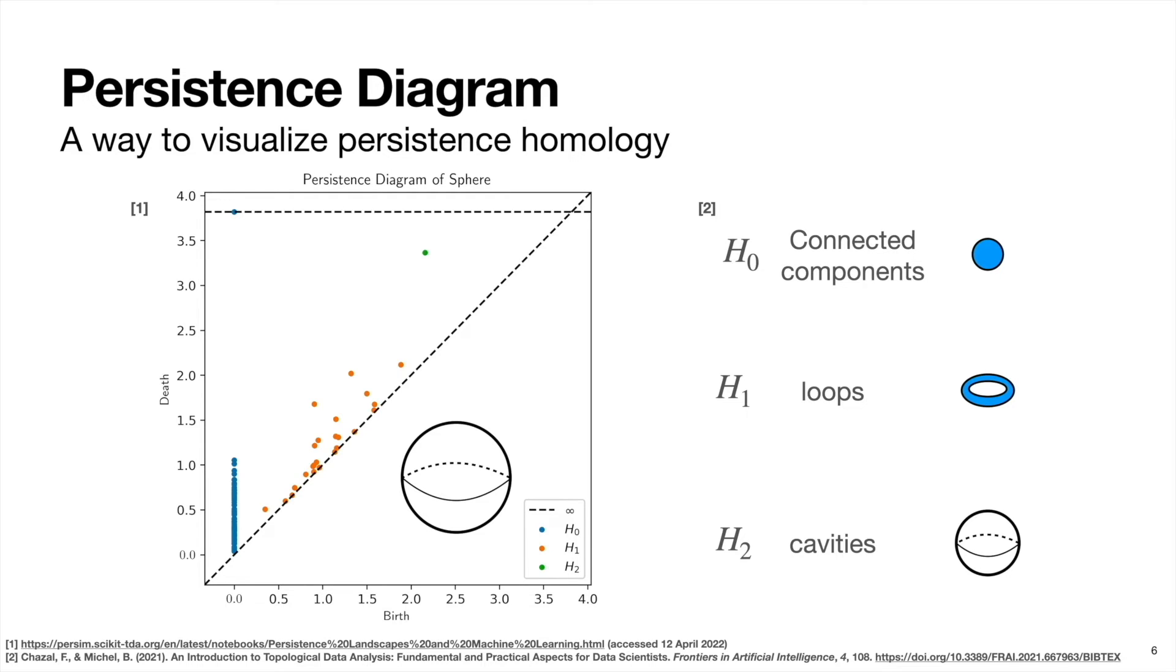So therefore, a point that sits near this black dashed line, this y equals x line, corresponds to a hole that disappeared soon after it appeared. Conversely, points that sit far away from this line represent holes that disappeared long after they appeared.